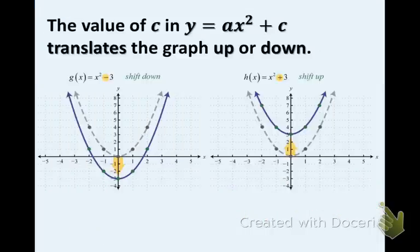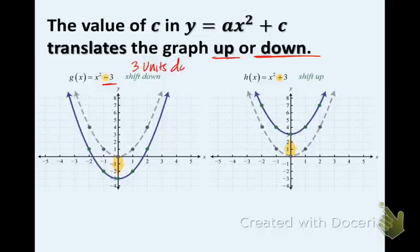Now let's talk about the c value. The value of c in y equals x squared plus c translates the graph up or down. Translates means shift up or down. A negative 3 means three units down, and a plus 3 means three units up. You will definitely be doing all of this in algebra two, so it's a good thing you're looking at it now.